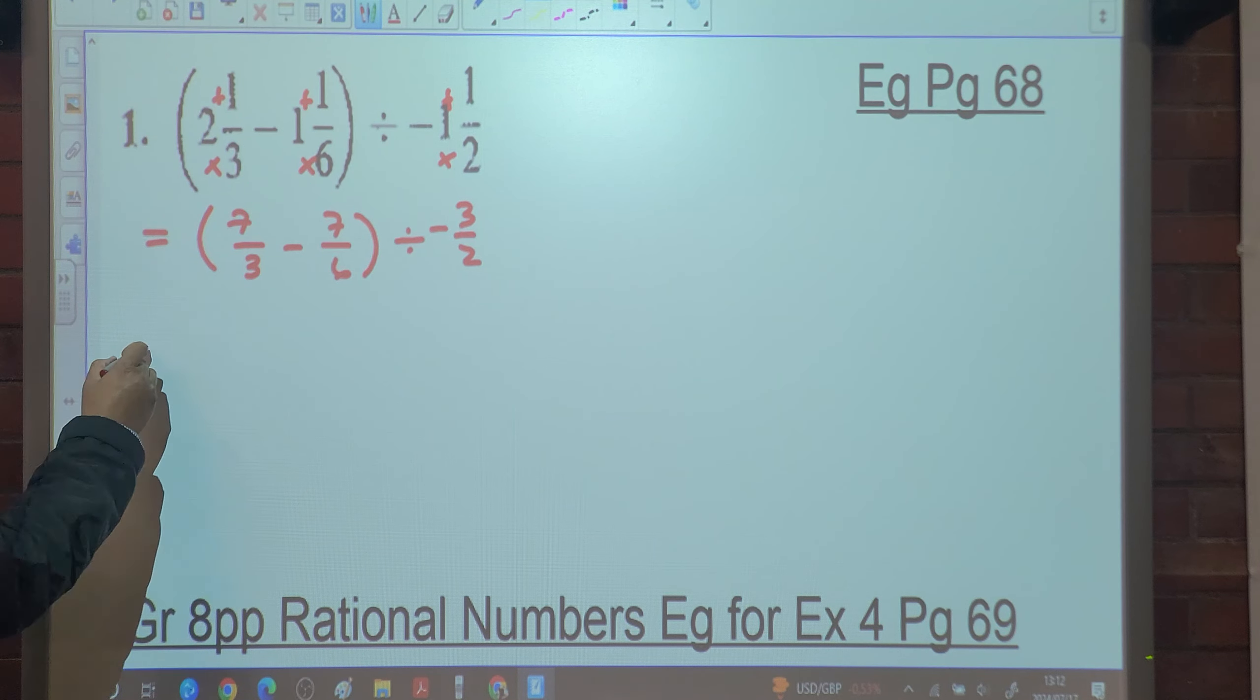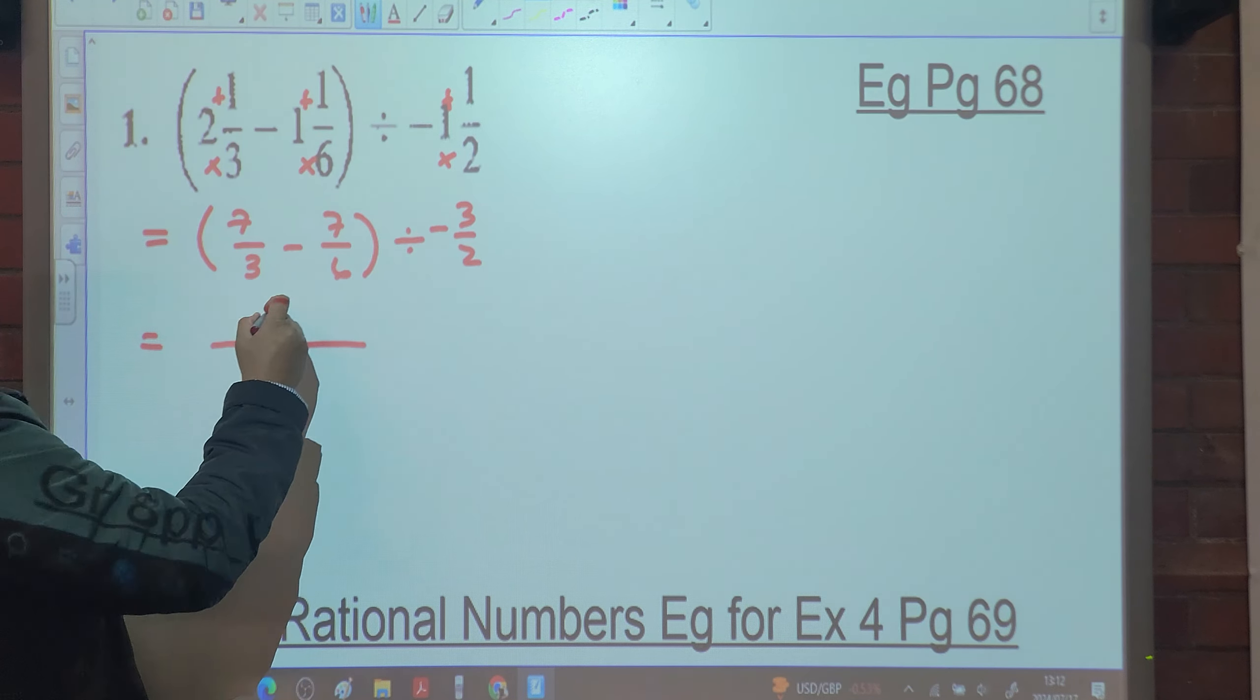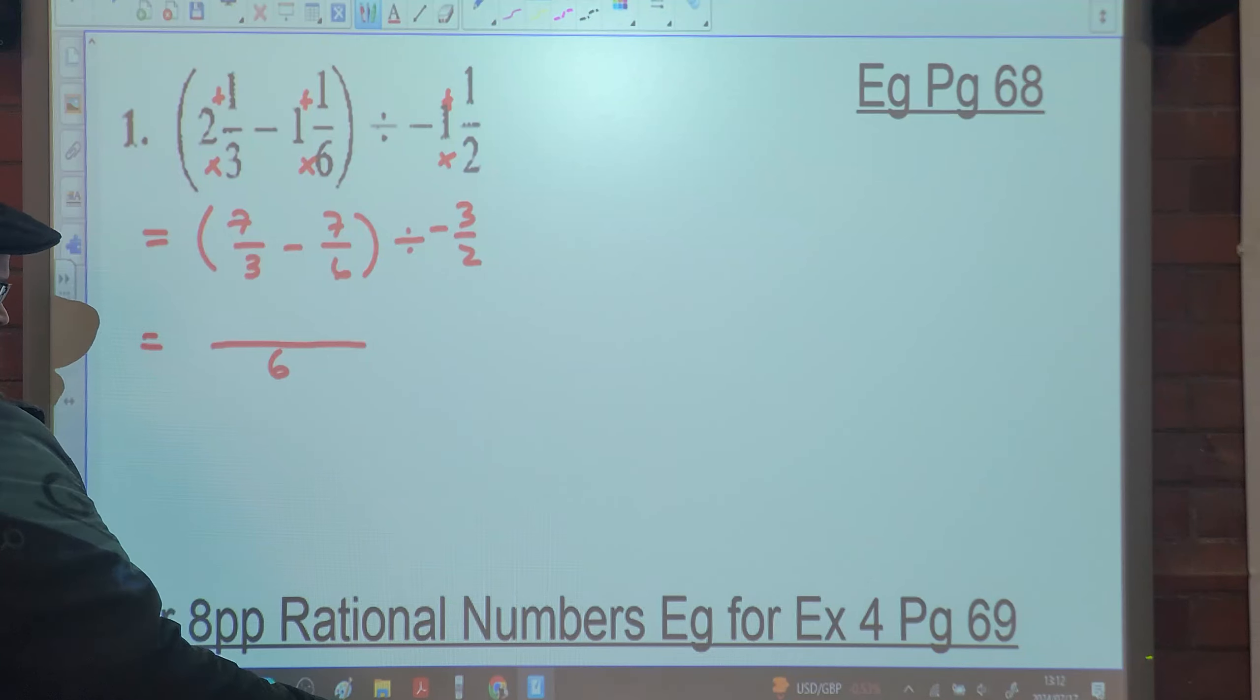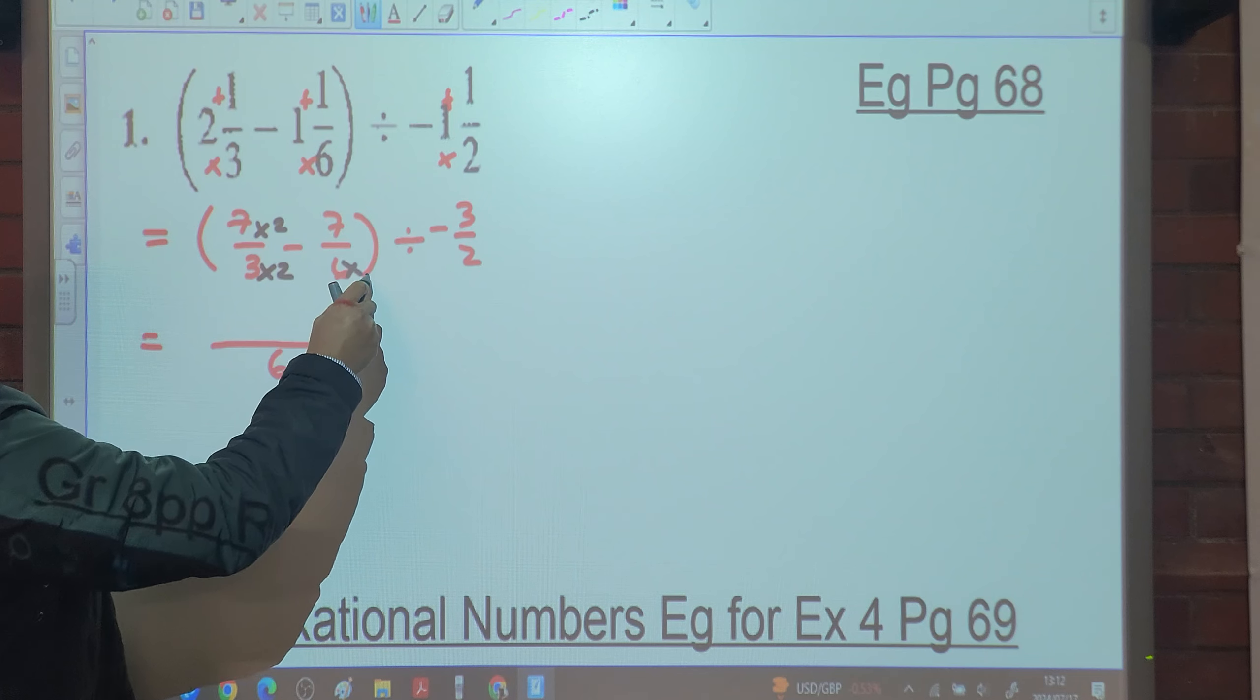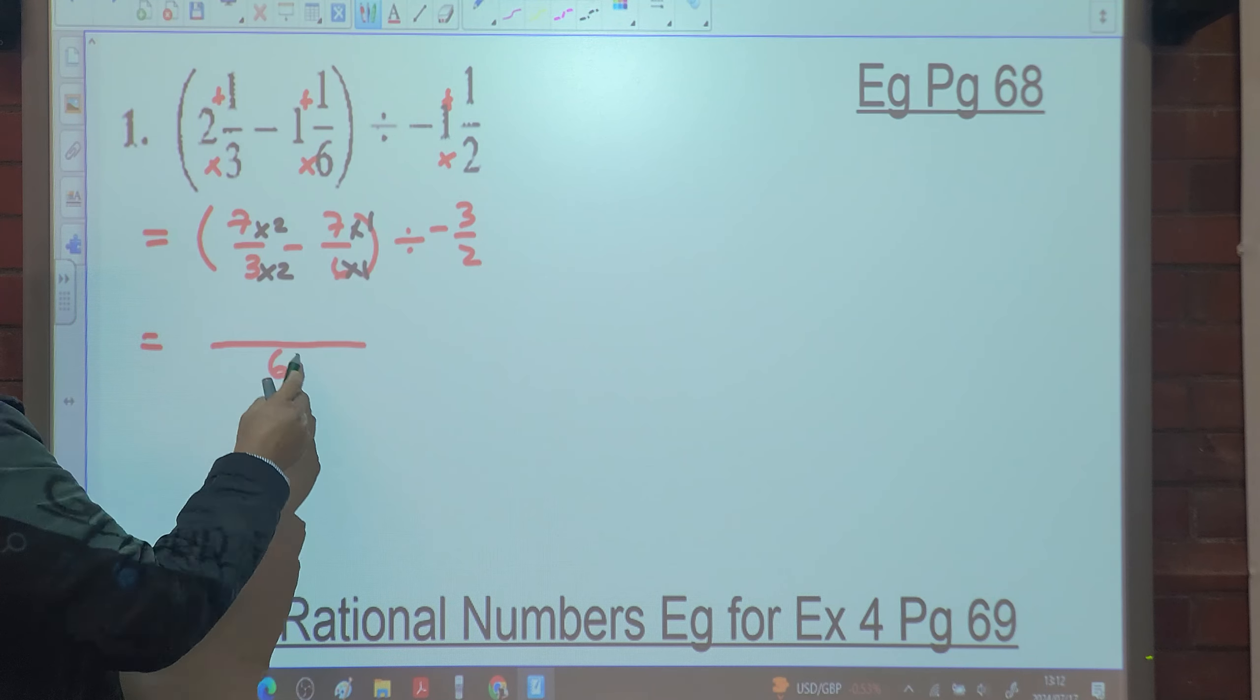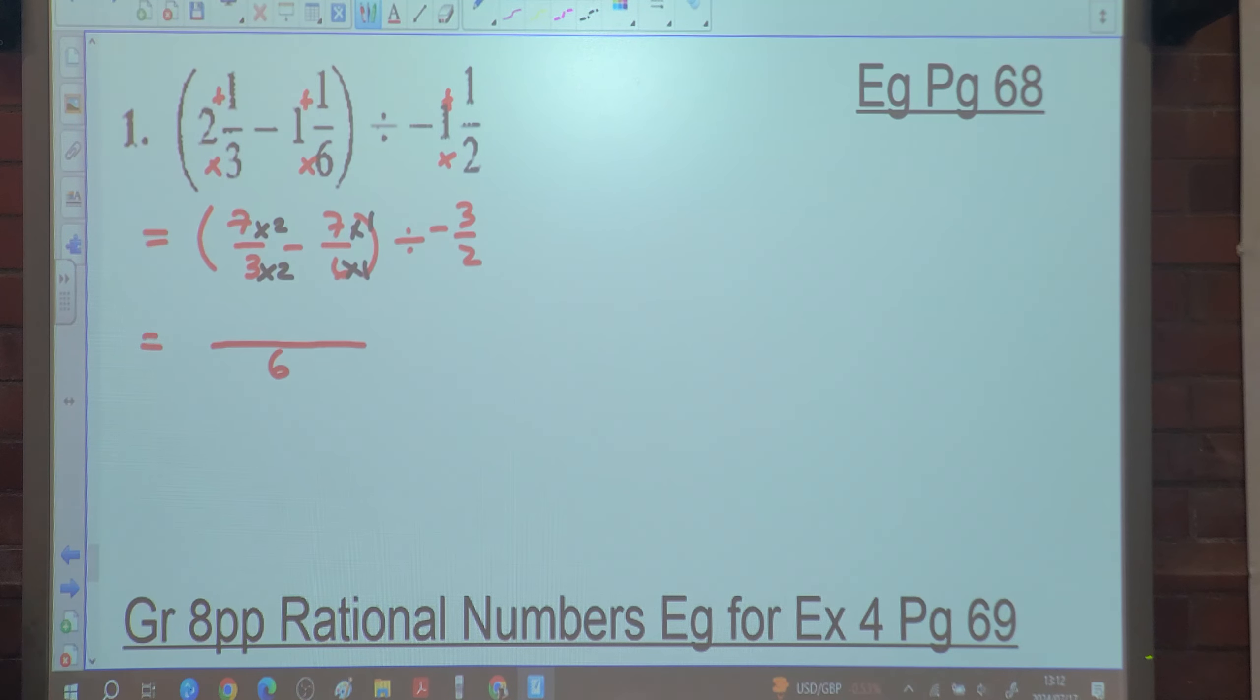So as you said, we're going to do the brackets first. What's that? LCD inside the bracket. Six. And multiply this by two. Multiply six by one. Why do we do this? To get the equivalent bracket.